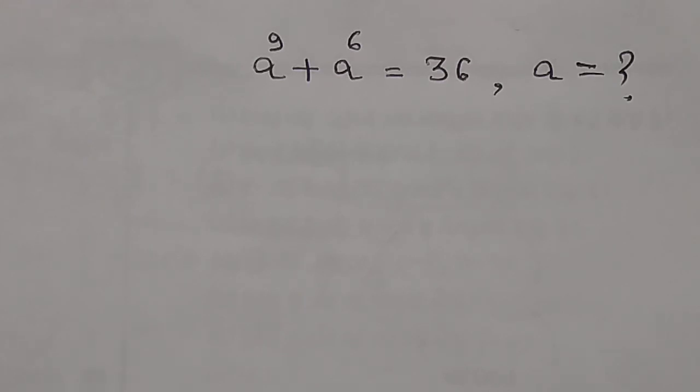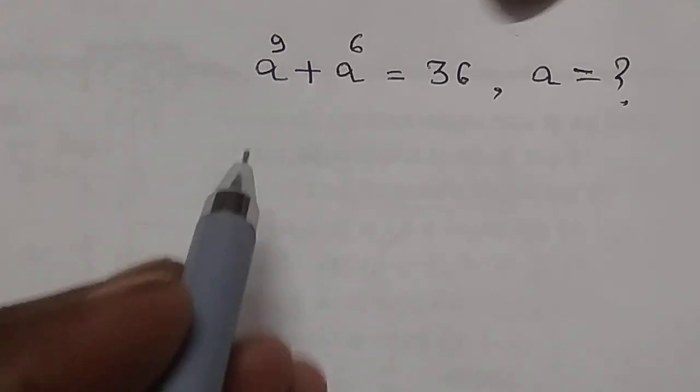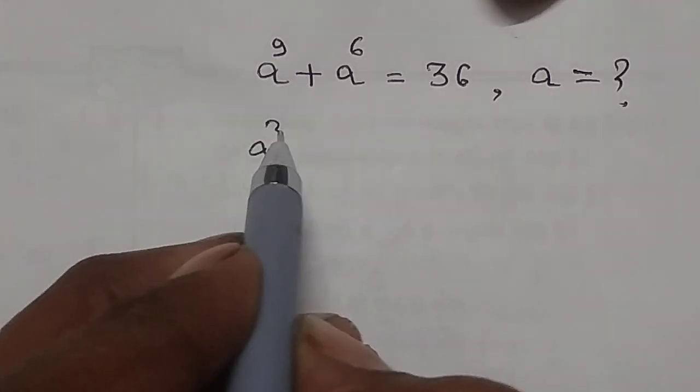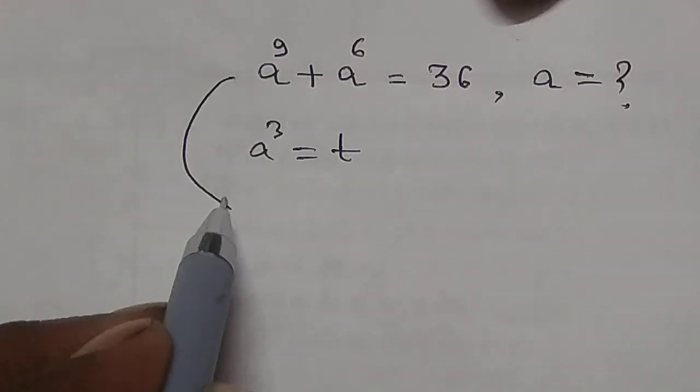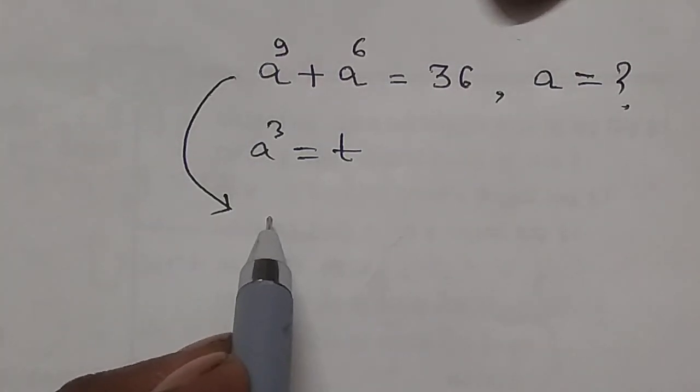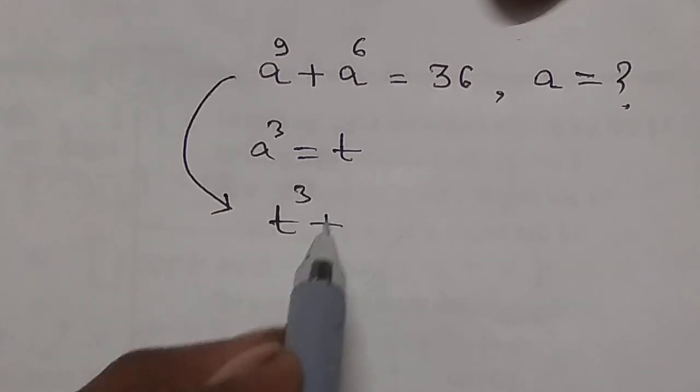Hello friends, now we discuss a very simple Olympiad math problem. You can solve it in one minute. Let a raised to 3 equal t, so we can write the problem in the form t raised to 3 plus